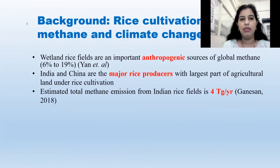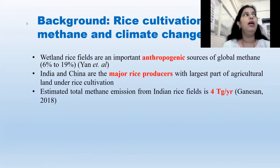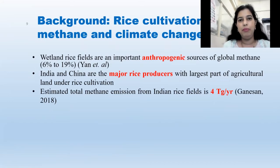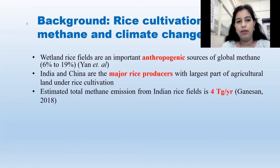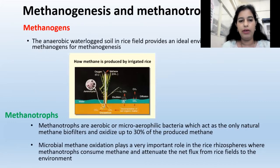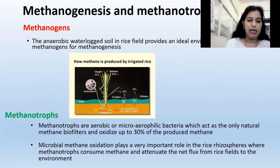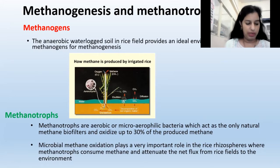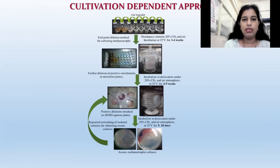We focused on rice agriculture and the methanotrophs associated with them. Wetland rice fields are one of the most important anthropogenic sources, and from India alone, around four teragrams of methane is generated and emitted to the environment. India and China being the major rice producers, we have to reduce these methane emissions, and for that, we first have to understand what the methanotrophic community structure is. In the rice fields, methane is produced in the muddy areas as a terminal carbon. When methane is coming out, there are methanotrophs present in the rhizospheric region which oxidize the methane, converting it to carbon dioxide, which has less global warming potential.